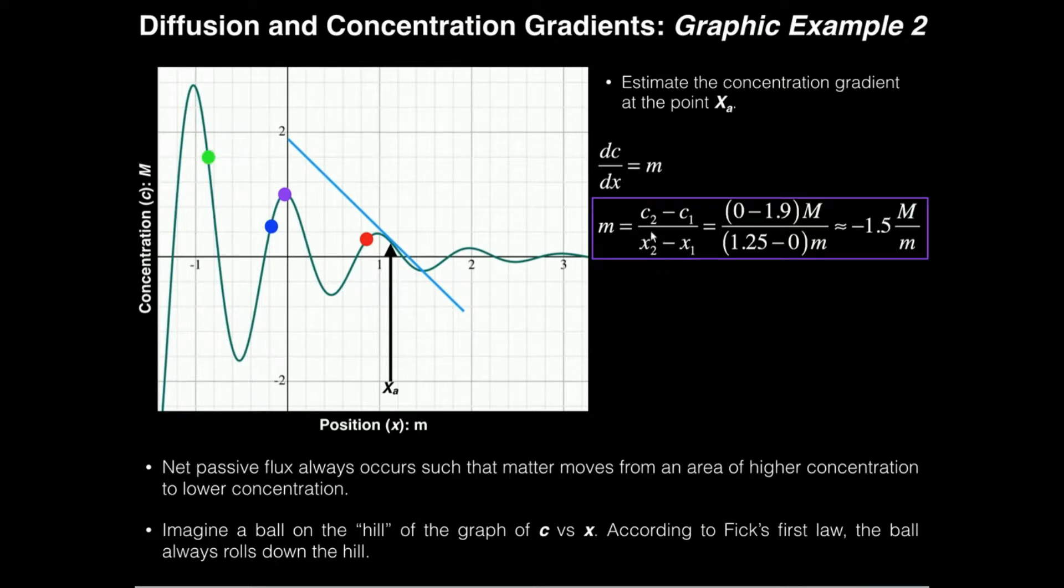Now let's define our second point as being right here. What's the concentration here? Well the concentration here is pretty easy, c is zero. What's our concentration at the first point c1? This would be 1.9 approximately.